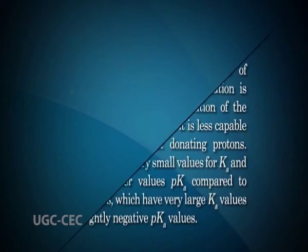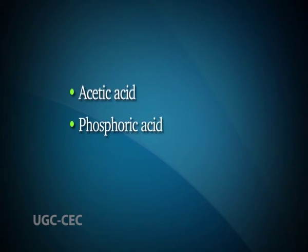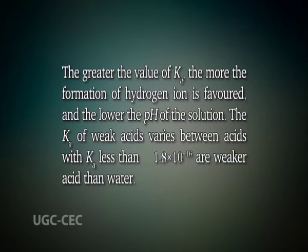Weak acids are less capable than strong acids at donating protons. Weak acids have very small values for Ka and therefore higher values of pKa compared to strong acids, which have very large Ka values and slightly negative pKa values. Examples of weak acids include acetic acid, phosphoric acid, and oxalic acid. The strength of a weak acid is represented as an equilibrium constant or as a percent dissociation. The equilibrium concentrations of reactants and products are related by the acid dissociation constant Ka. The greater the value of Ka, the more hydrogen ion formation is favored and the lower the pH. The Ka of weak acids varies; acids with Ka less than 1.8 × 10⁻¹⁶ are weaker acids than water.